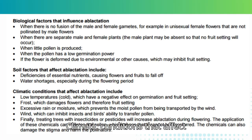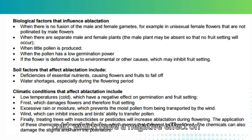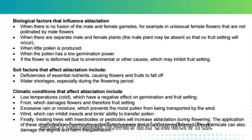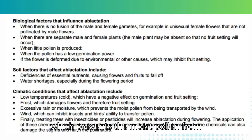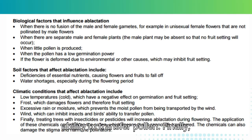Climatic conditions that affect ablactation include: low temperatures or cold, which have a negative effect on germination and fruit setting; frost, which damages flowers and therefore fruit setting; excessive rain or moisture, which prevents moist pollen from being transported by the wind; and wind, which can inhibit insects and birds' ability to transfer pollen.